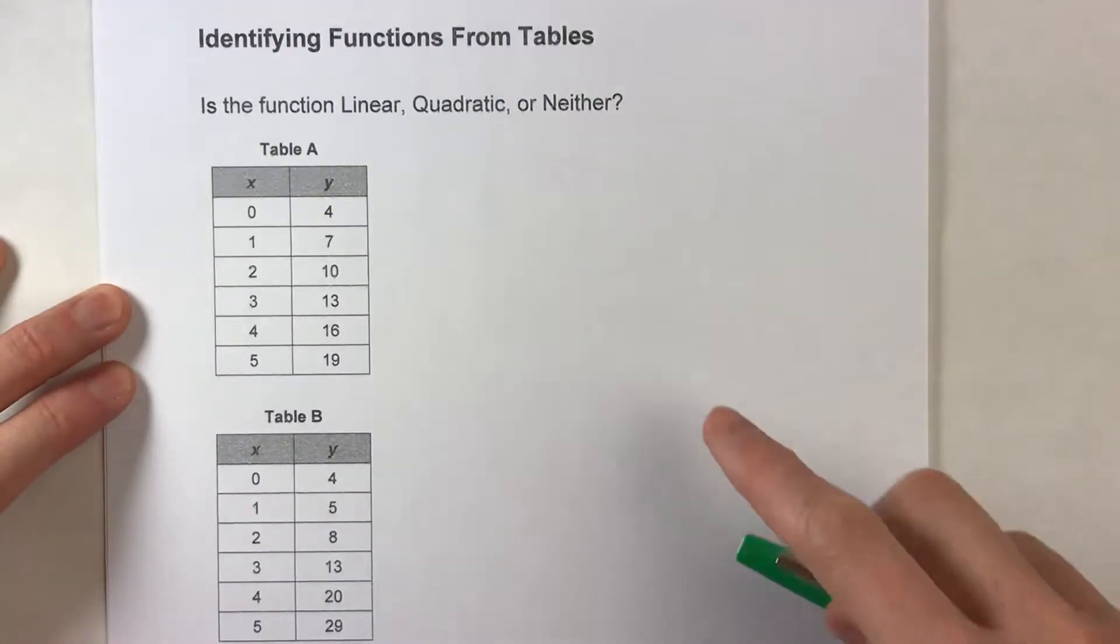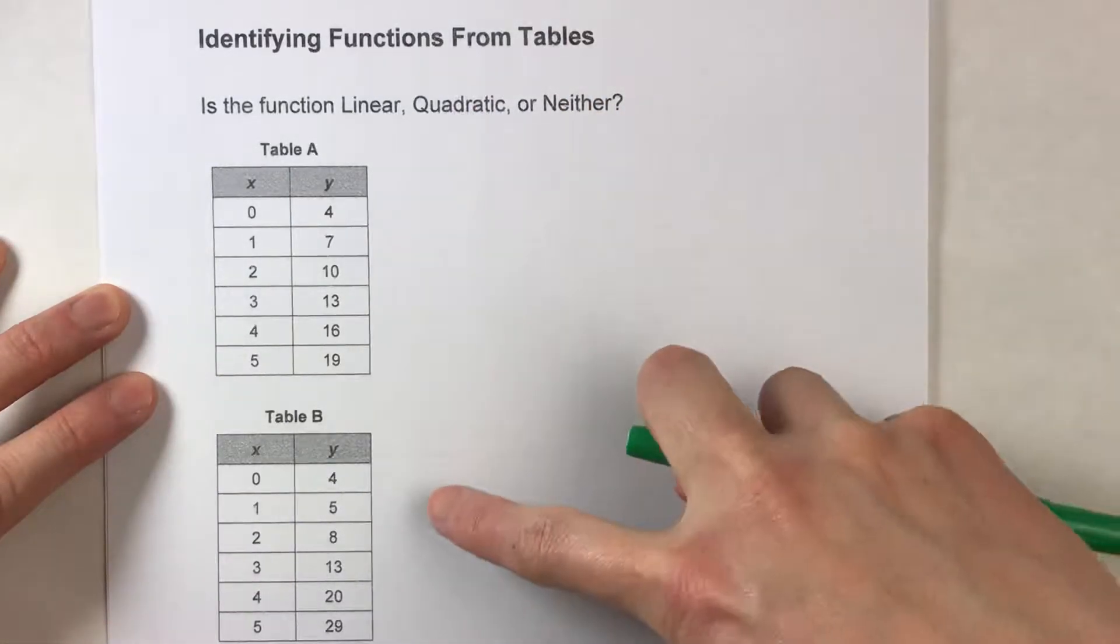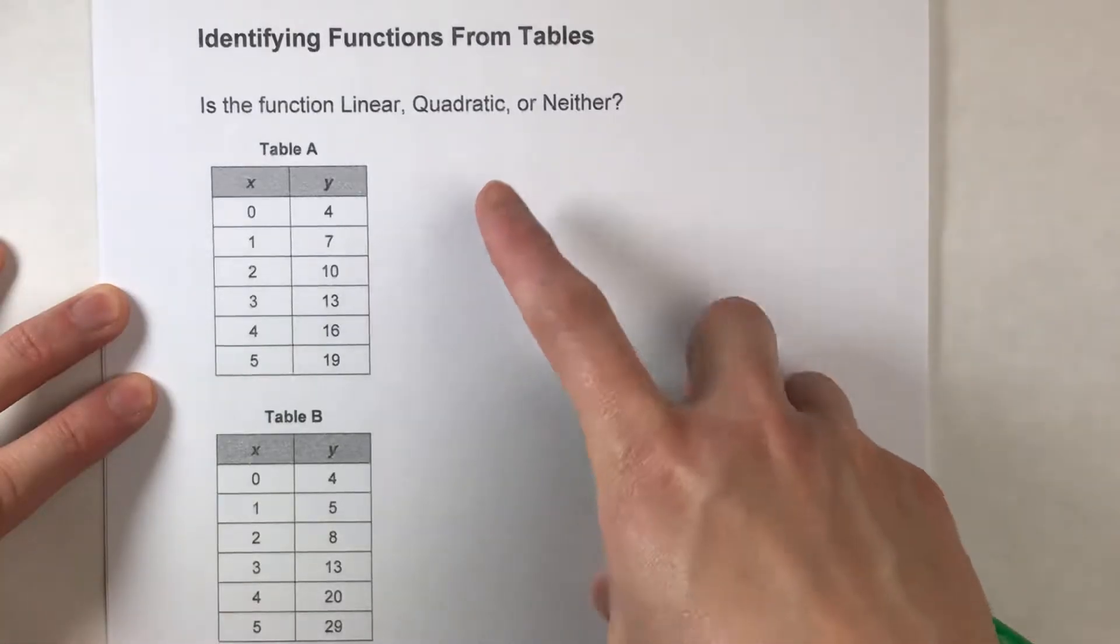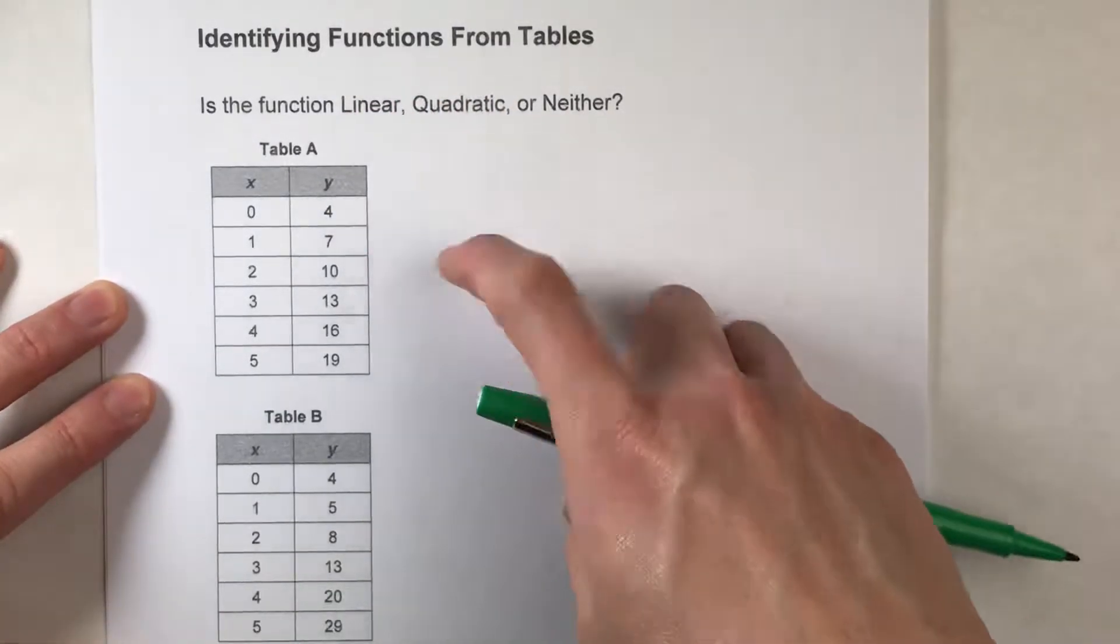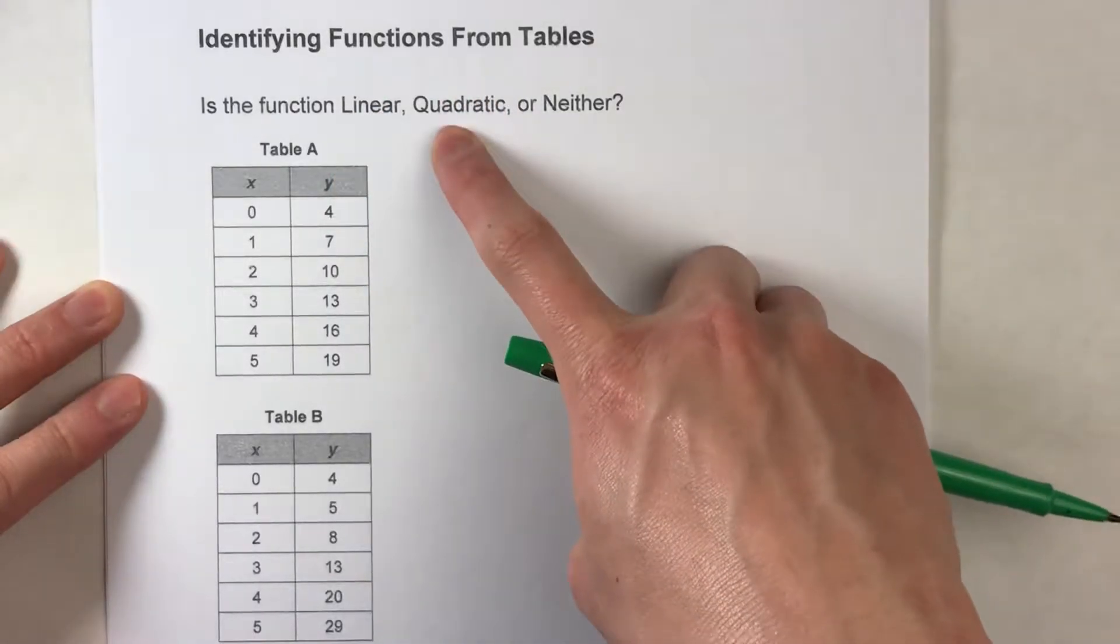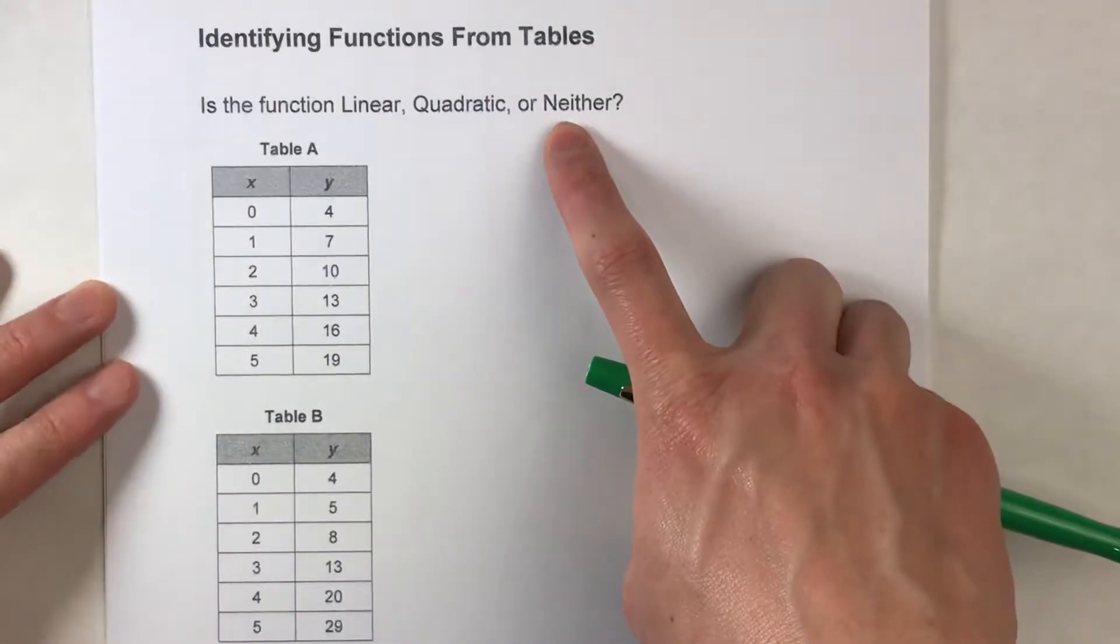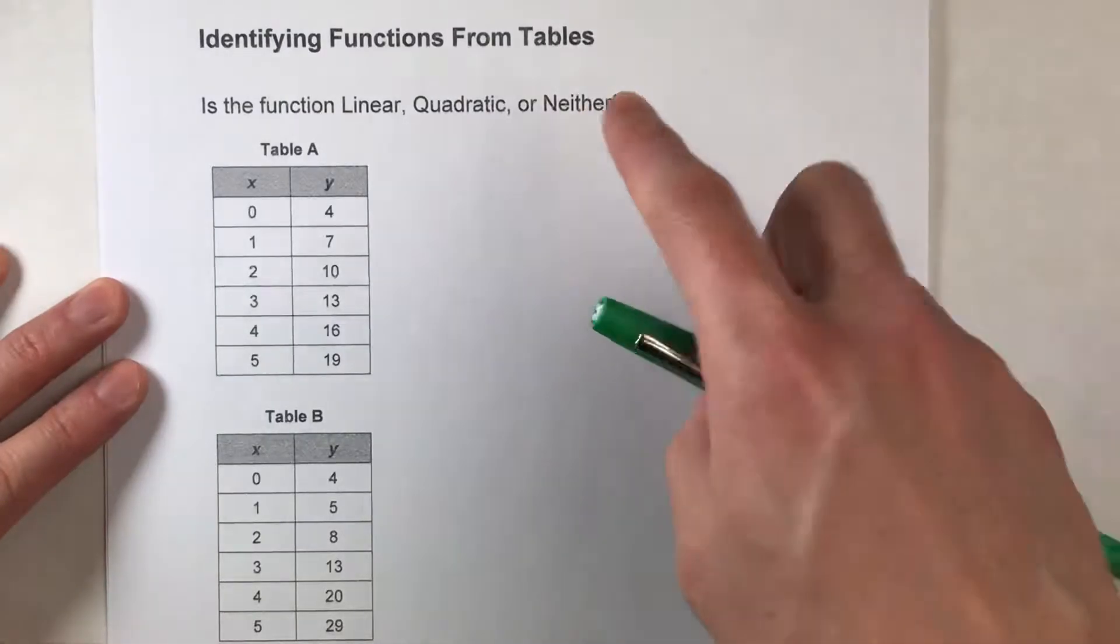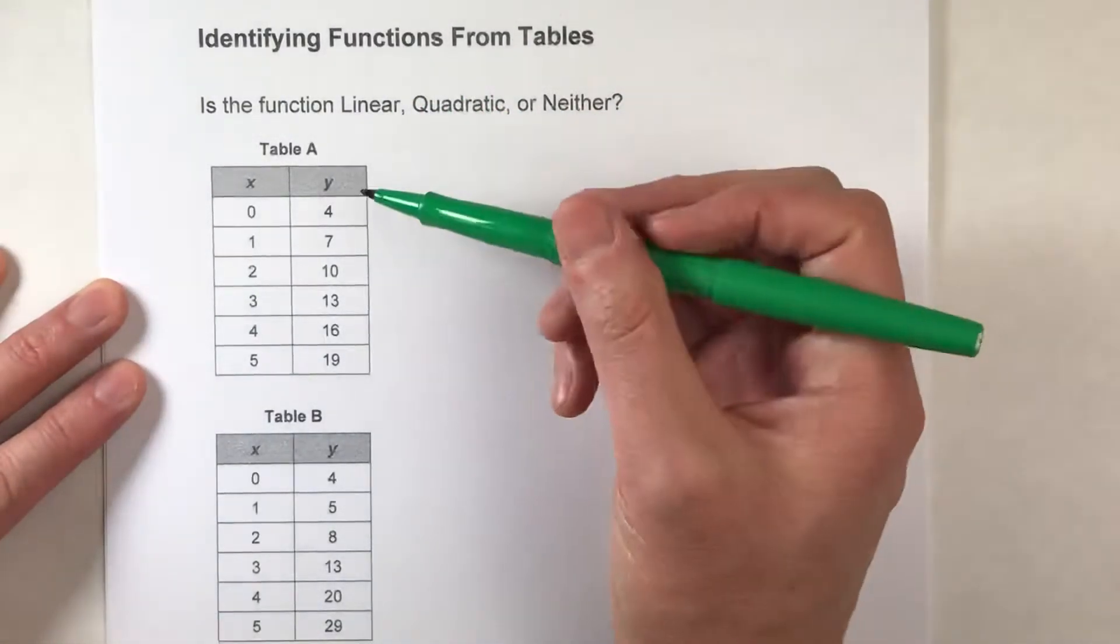So today we are going to be looking at tables and trying to figure out what kind of function is being represented. Is it a linear function? Is it a quadratic function? Or is it neither? I've got three examples to look at. Let's take a look at the first one.